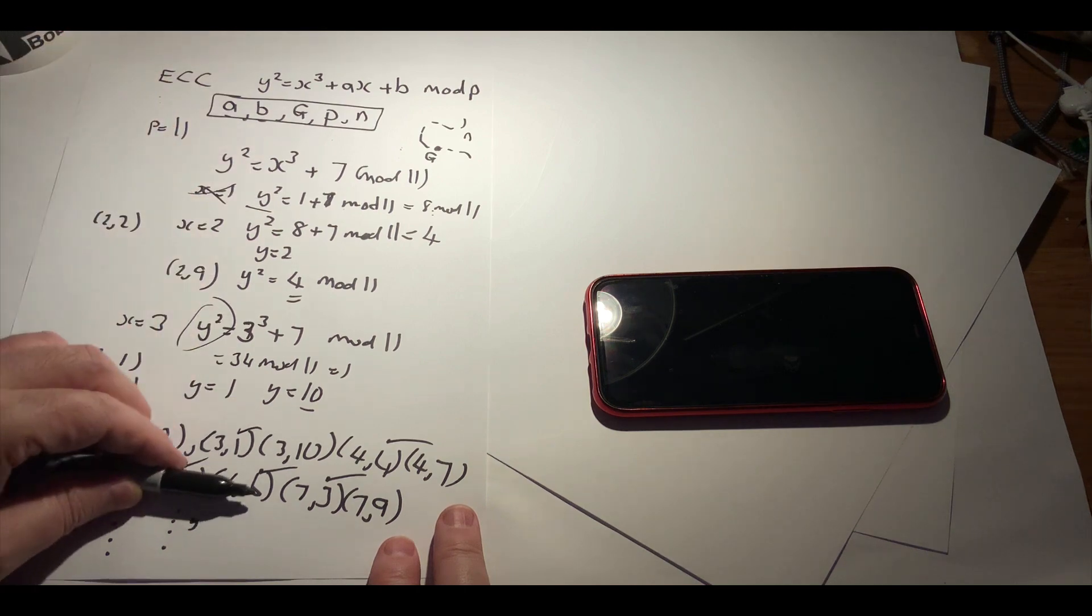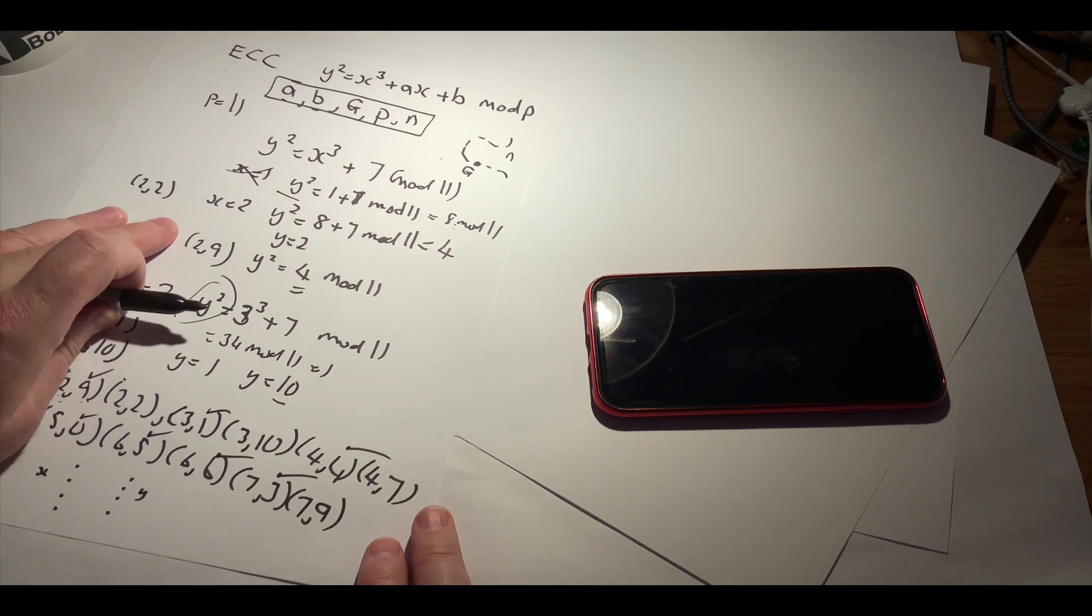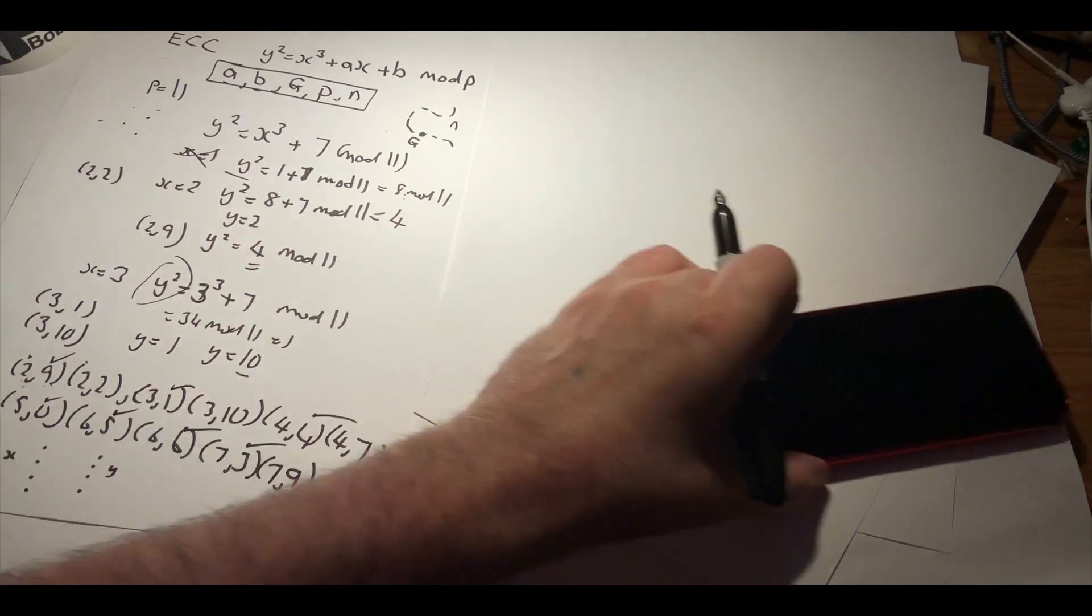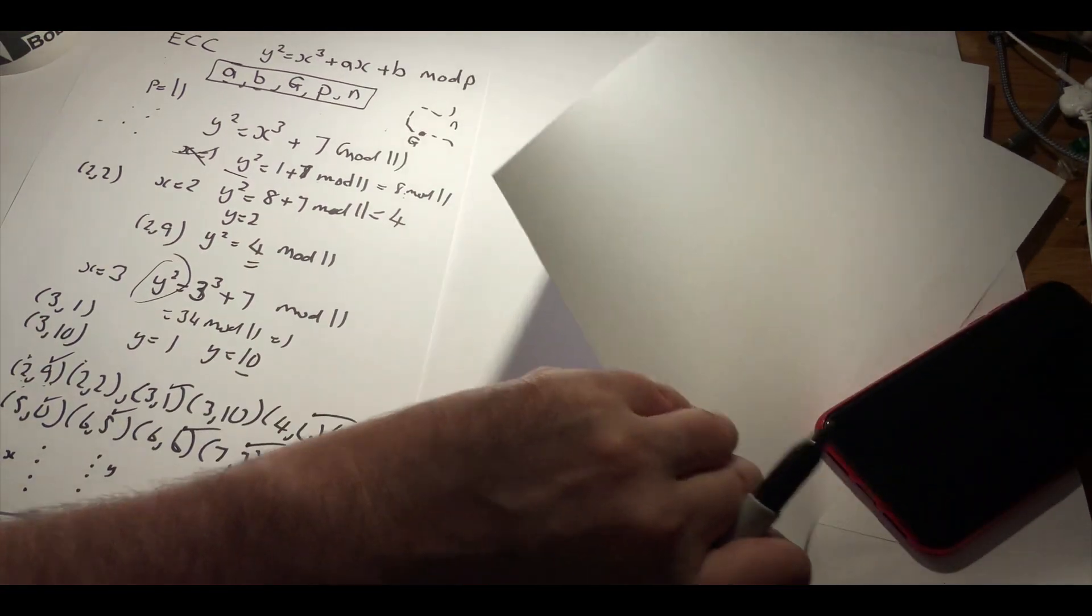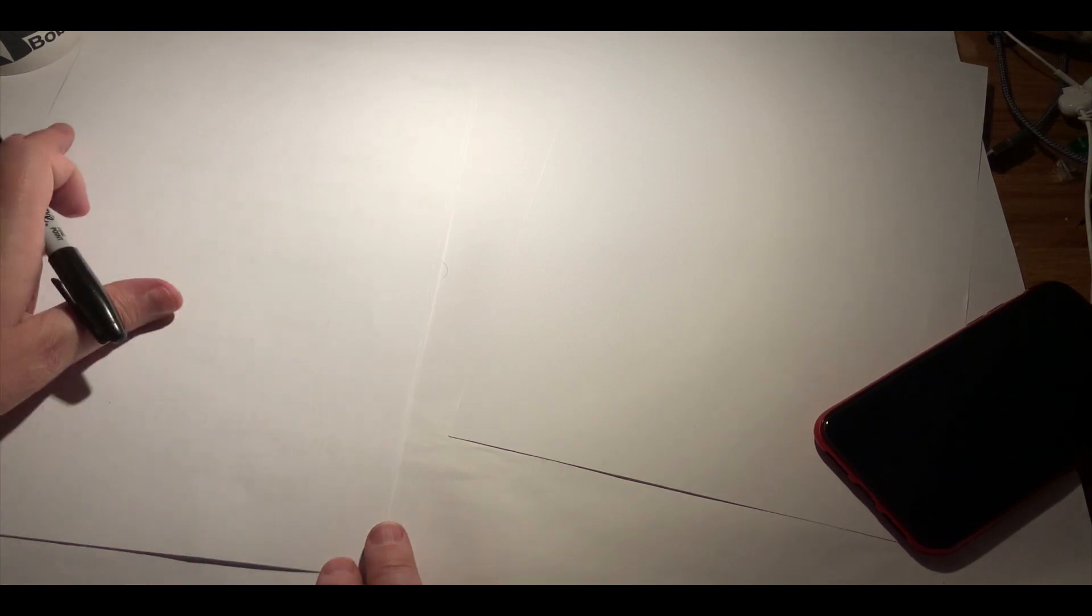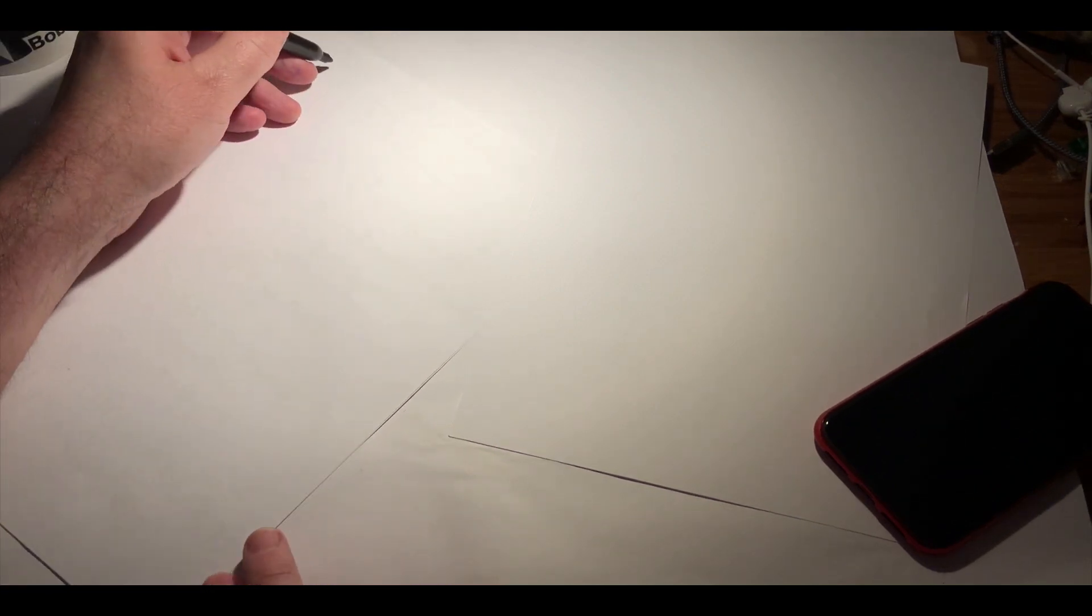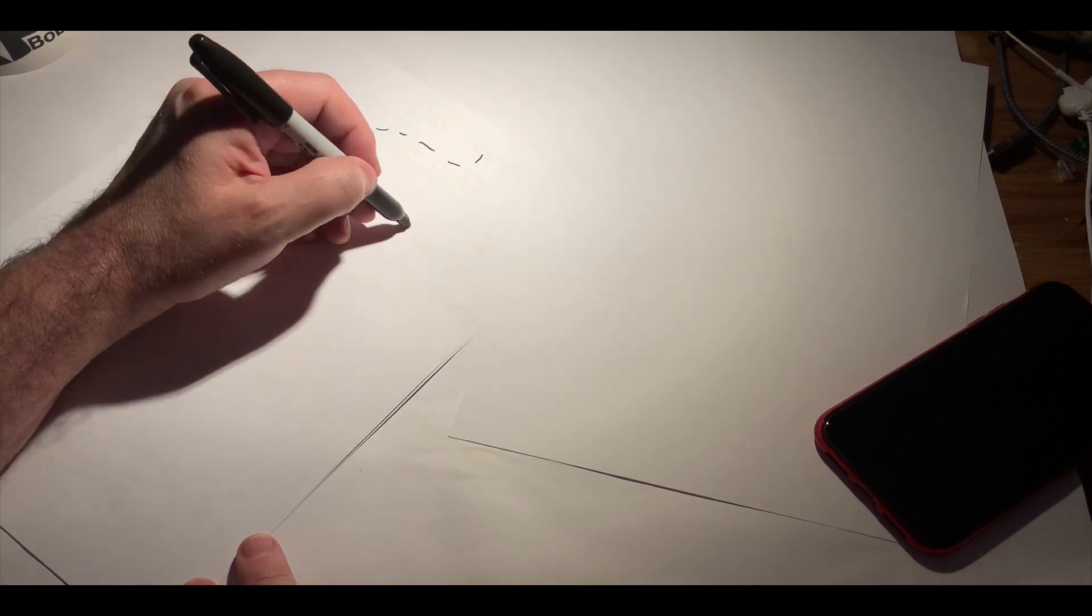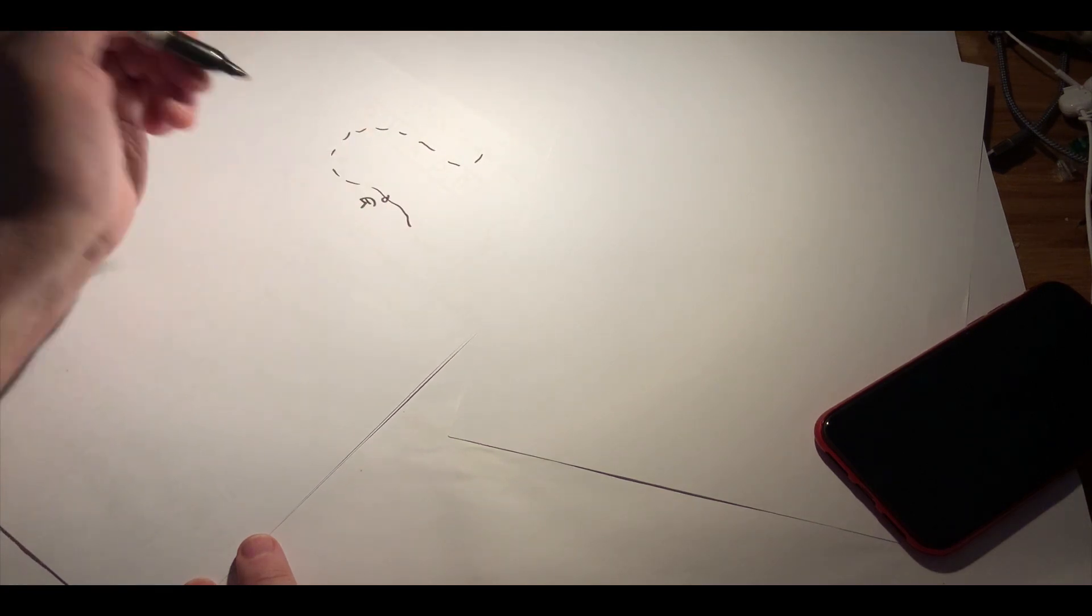In this way, we actually end up with our points on the curve in a discrete way. The way we use this typically is that we take our base point. So if we just draw our elliptic curve, then it might look a bit like this.